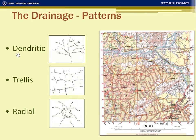In the trellis pattern, the tributaries join the main river at a right angle, or almost at a right angle, as you can see in grid square 404.